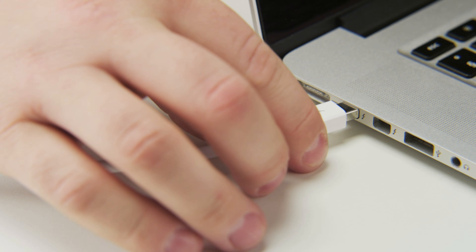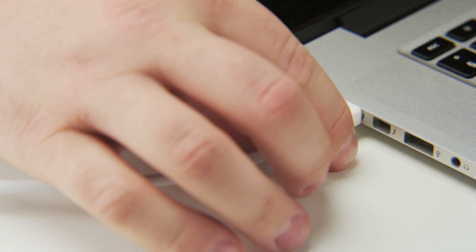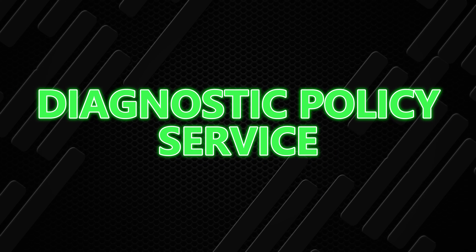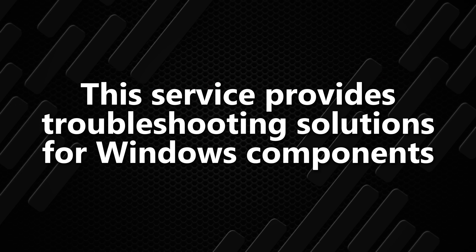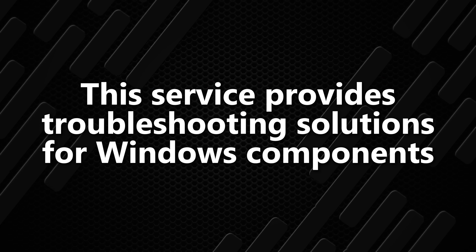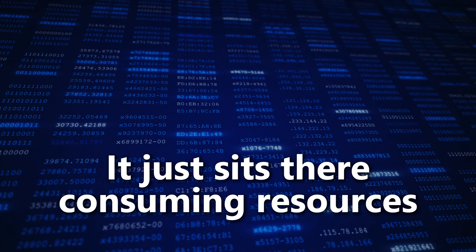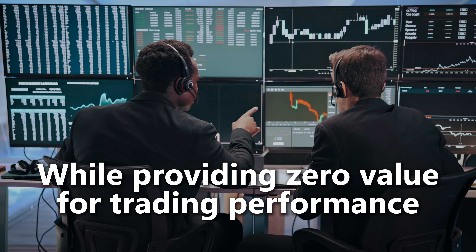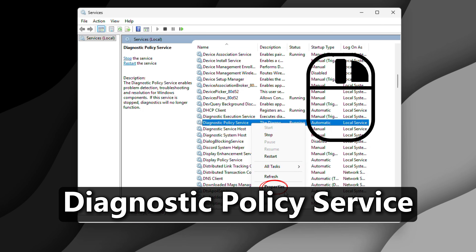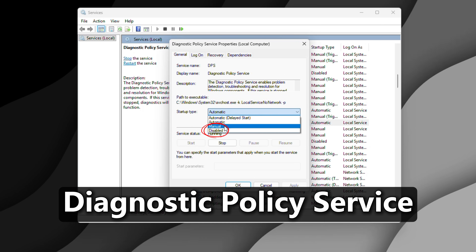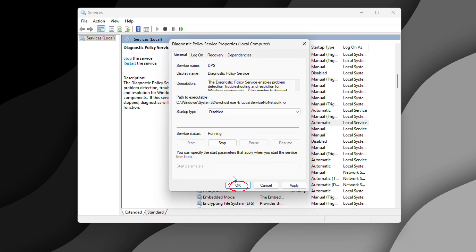For power users, we're going to disable something called the Diagnostic Policy service. This service provides troubleshooting solutions for Windows components, but it's about as useful as a rock. It just sits there consuming resources while providing zero value for trading performance. Same drill — right click, Properties, set it to Disabled, and click OK.